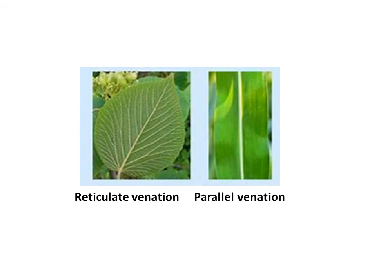Here I have shown some pictures about reticulate venation and parallel venation. In reticulate venation, the veins are not parallel, whereas in parallel venation the veins run in a parallel way. Parallel venation can be seen in maize, wheat, and rice, while reticulate venation is seen in rose and mustard plant.